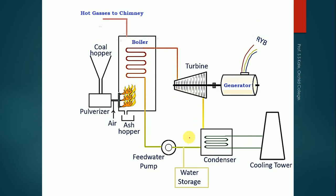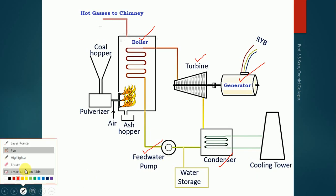In the thermal power plant, there are four to five main components. The first component is the boiler, then the turbine, the generator, the condenser, and the feed water pump. These are the major components in the thermal power plant, and by the combination of all these we are going to generate electricity.